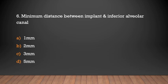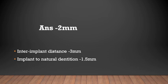Minimum distance between implant and inferior alveolar canal should be 2mm. Interimplant distance is 3mm. Distance between implant and natural dentition is 1.5mm.